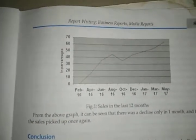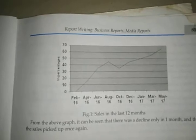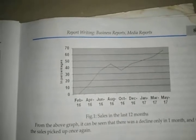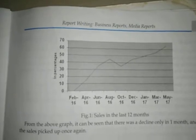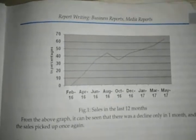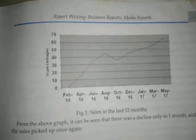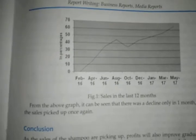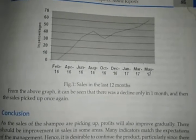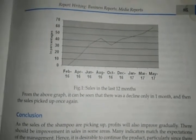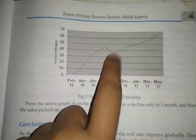Looking at the sales graph: month-wise data on the x-axis and percentages on the y-axis. From the graph, it can be seen that there was a decline in only one month.